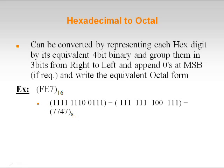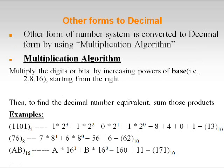So we get 7747 in octal representation. This is how we convert a given hexadecimal number into binary as well as into octal. Now for other forms to decimal — up to now we did not see how to convert binary, octal, and hexadecimal to decimal form.